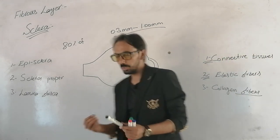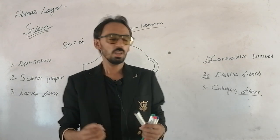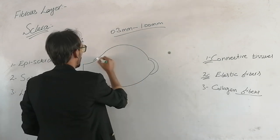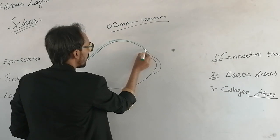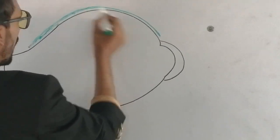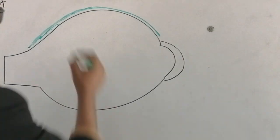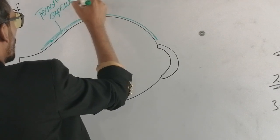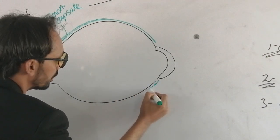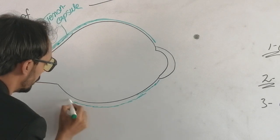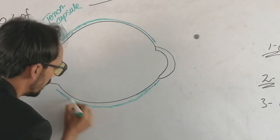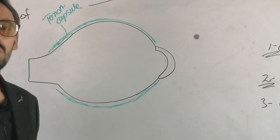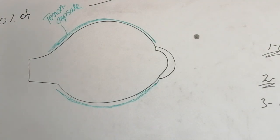On the outermost surface of the sclera, there is a fascial sheath called the Tenon's capsule. This greenish structure visible in the diagram is the Tenon's capsule, and beneath it is the first layer of the sclera, which is called the episclera.